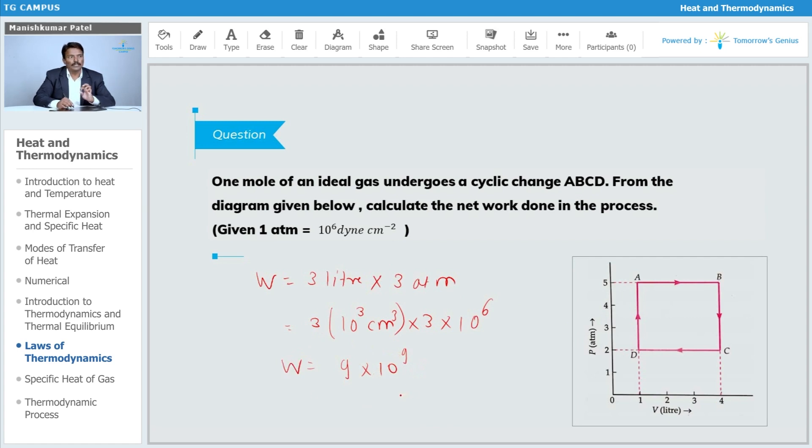So this is the work done, which you can write down for this particular case. That is the formula for this one. Work done is nothing but energy, so the energy is in joules or ergs. Since it is in CGS units, you can write it down in terms of ergs.